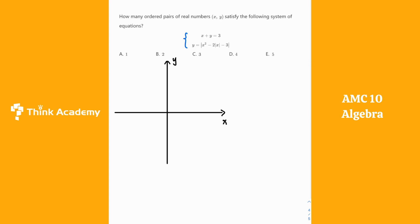For the first equation, it's straightforward because we just have a linear function: x plus y equals 3. For this linear function, both the x-intercept and the y-intercept are equal to 3. Once we find the x and y-intercepts, we can make a graph for this linear function.